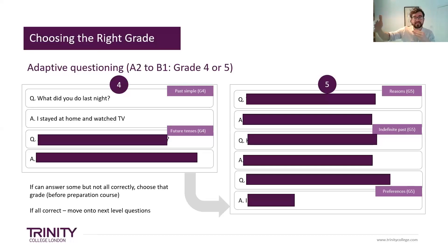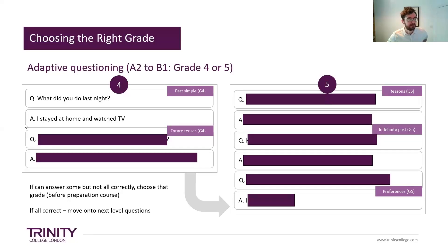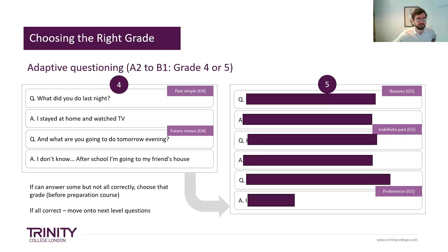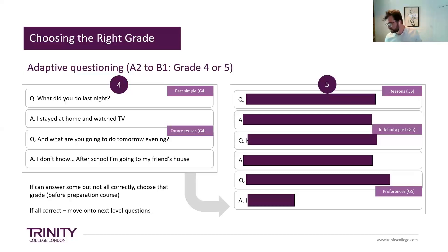So we might ask at grade four: 'What did you do last night?' Maybe the candidate says, 'I stayed at home and watched TV.' No problems. We continue with grade four questions. An example question for grade four could be: 'And what are you going to do tomorrow evening?' The candidate says: 'After school, I'm going to my friend's house.' So far they're doing fine. Grade four seems fine. Let's go up to grade five. One of the things at grade five is reasons, so we'd ask 'why' questions. Type in the chat what question you might ask!